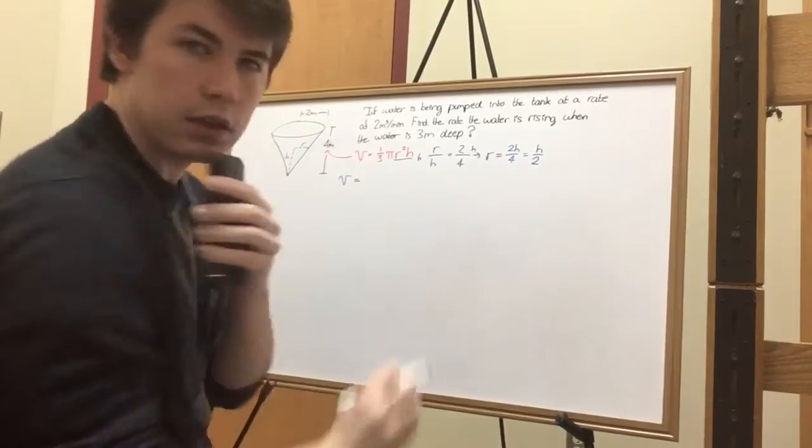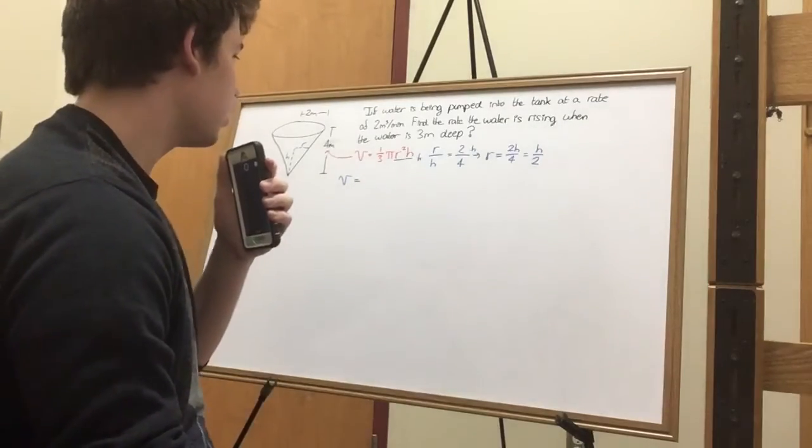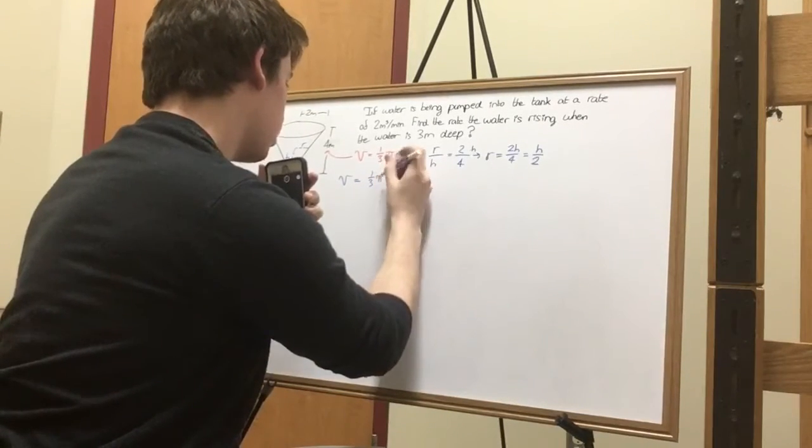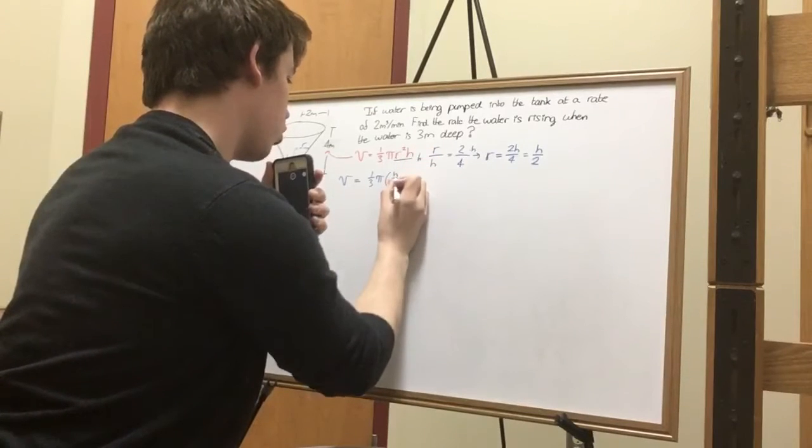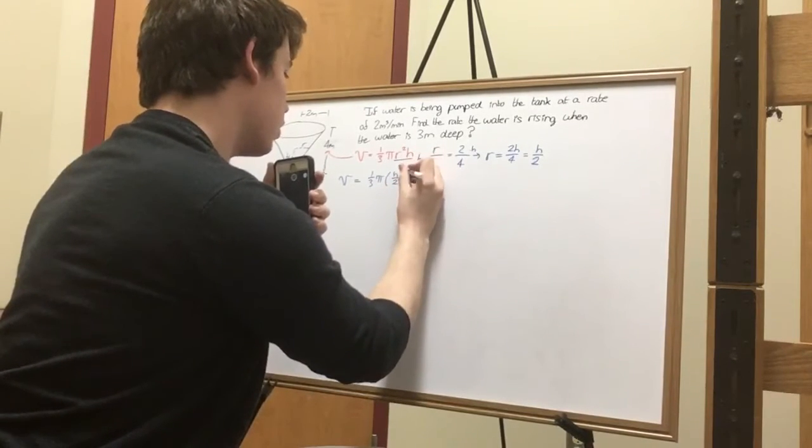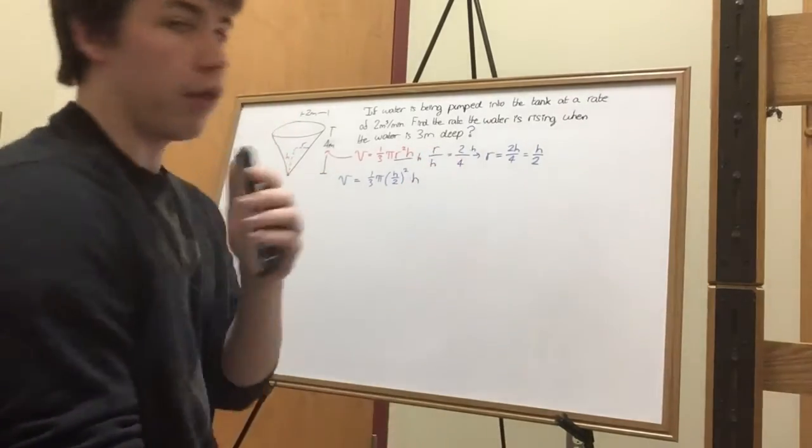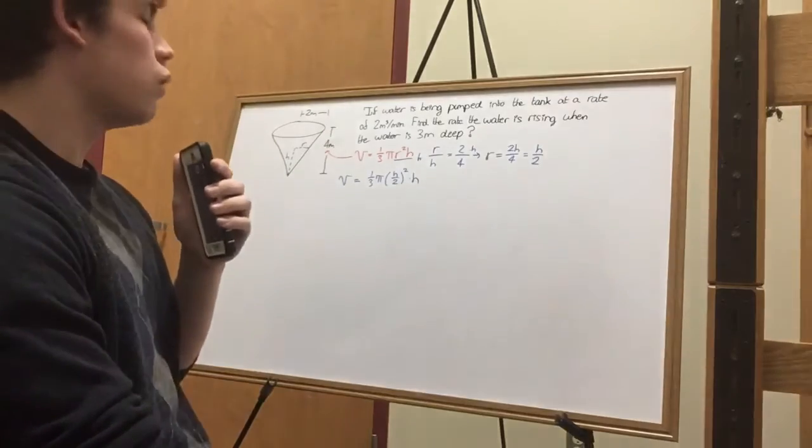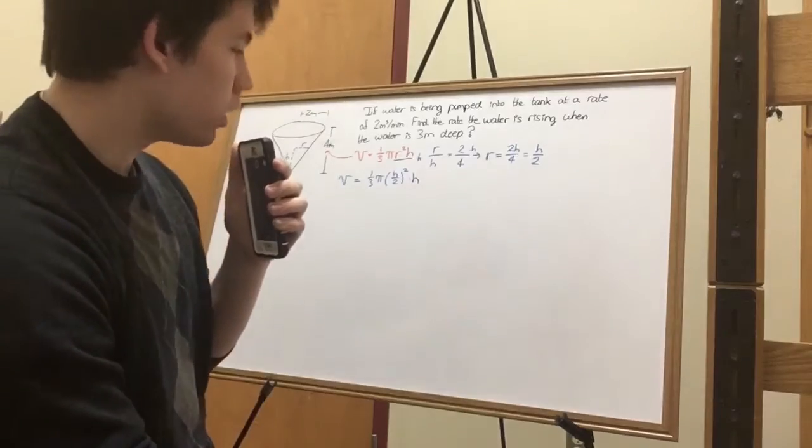Volume. Is that legible? Yeah, close enough. Alright, so volume equals one-third pi, h over two squared, multiplied by h. That's our equation. It is now in a format that we can properly derive to find our related rate solution.